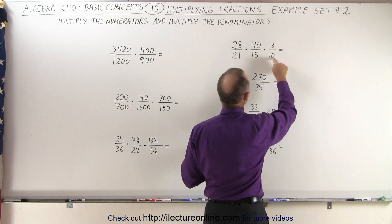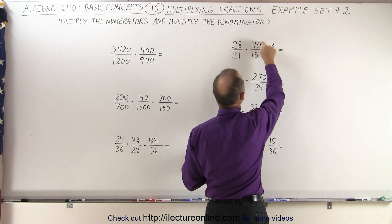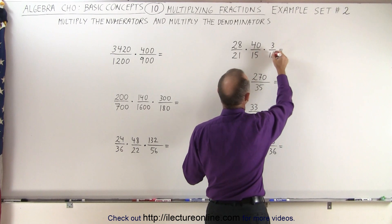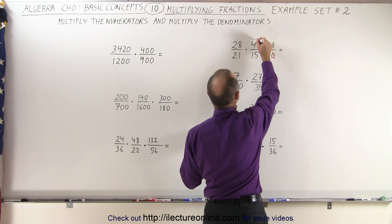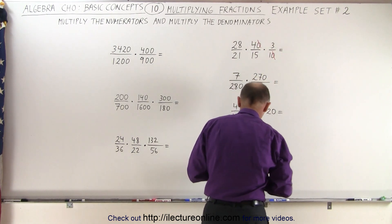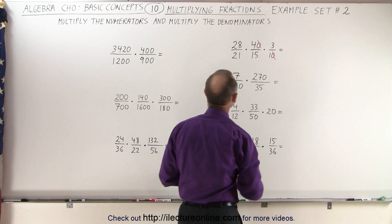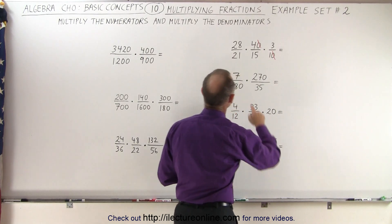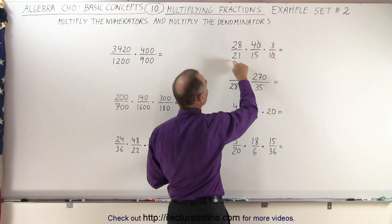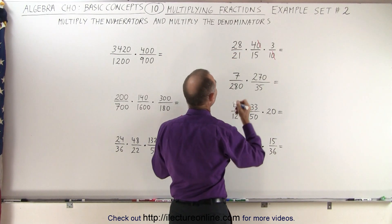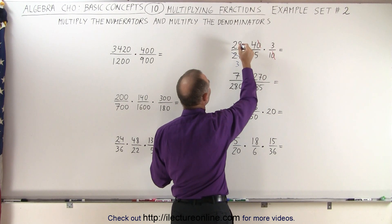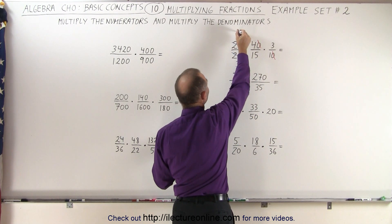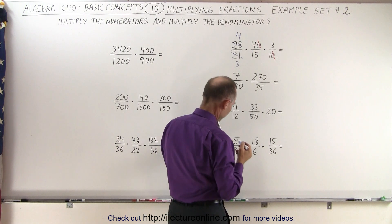We can divide the 10 and the 40 by 10 simply by getting rid of the 0. So we get rid of that 0 and get rid of that 0 — that simplifies things pretty well. Then here we have a 21 and 28. We can divide 21 by 7, and that gives us 3. We can divide 28 by 7, and that gives us a 4.